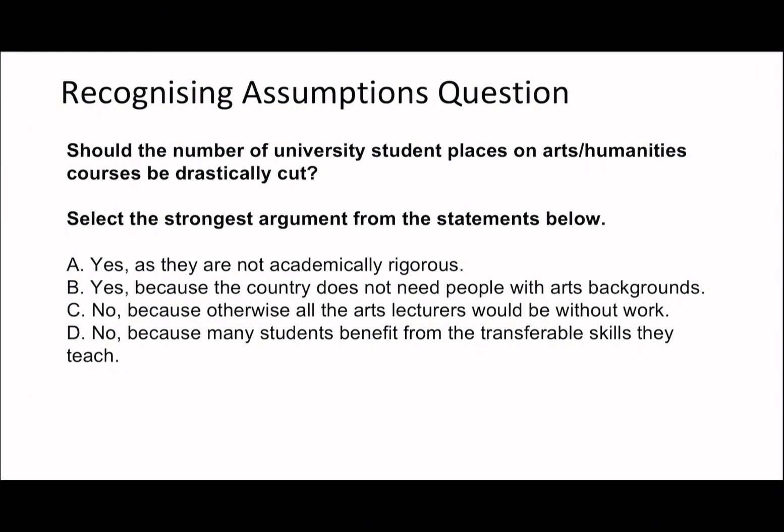The first question: should the number of university student places on arts and humanities courses be drastically cut? This is quite clearly a non-clause question, and the important word here is 'drastically cut.' Option A says they're not academically rigorous — I would rule that out because it narrows the scope to academic rigor, and that's not the only reason for doing a university course.